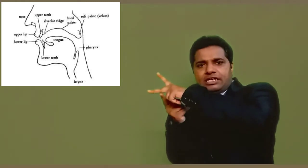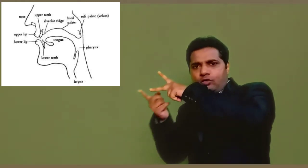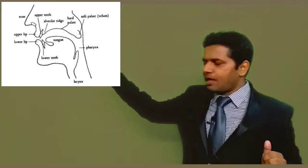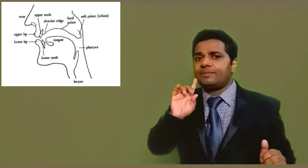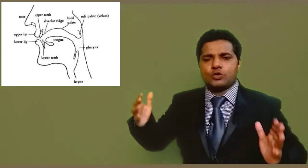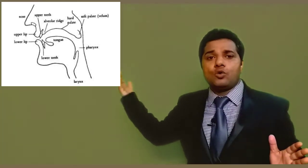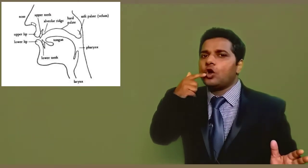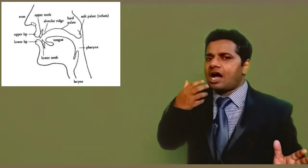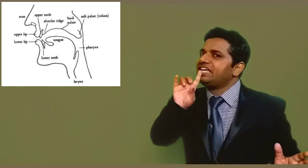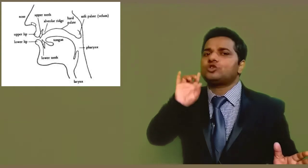Just behind that, you've got hard palate, and if you go a little more backward you get soft palate, that is called uvula. This is called the roof of the mouth. Lower jaw has got lower teeth. Upper jaw has got upper lip, upper teeth, teeth ridge, hard palate, and soft palate.